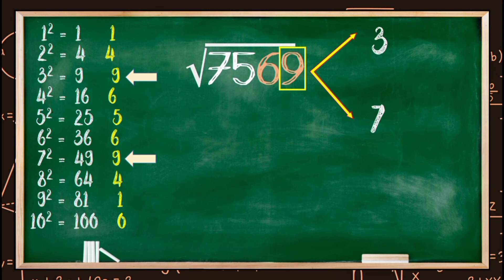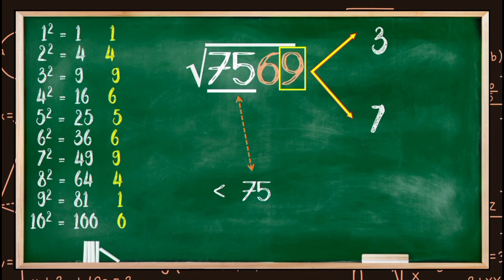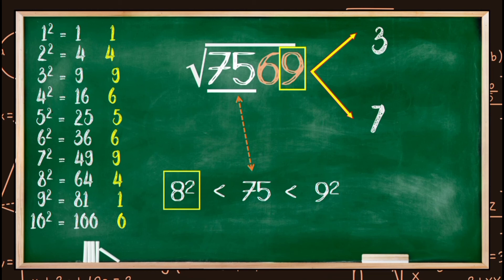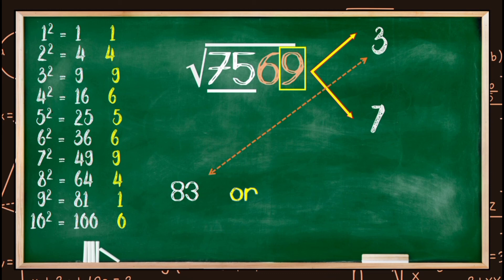Step three: consider the second group, which is 75. Since 75 comes in between the squares of 8 and 9 — that is, 75 is greater than the square of 8 which is 64, and 75 is less than the square of 9 which is 81 — we can say that the tens digit of the square root of 7569 will be 8. So far, the square root will be either 83 or 87.